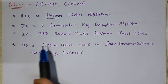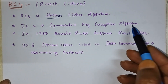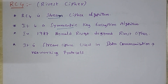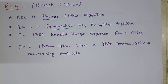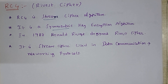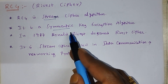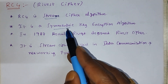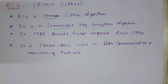RC4 is a symmetric key encryption algorithm. What is the meaning of symmetric? Symmetric key means we will use the same key for encryption as well as decryption. If any algorithm uses a single key for both encryption and decryption, those algorithms are called symmetric key encryption algorithms. RC4 is one such symmetric key algorithm.